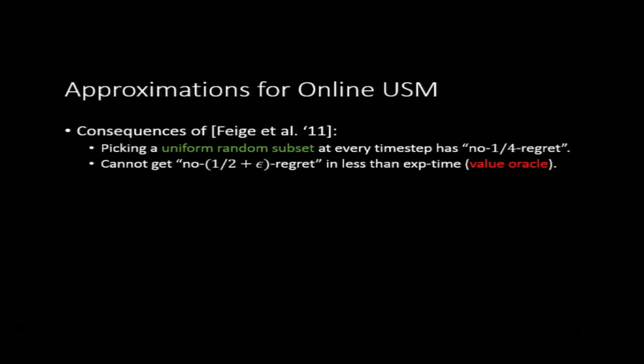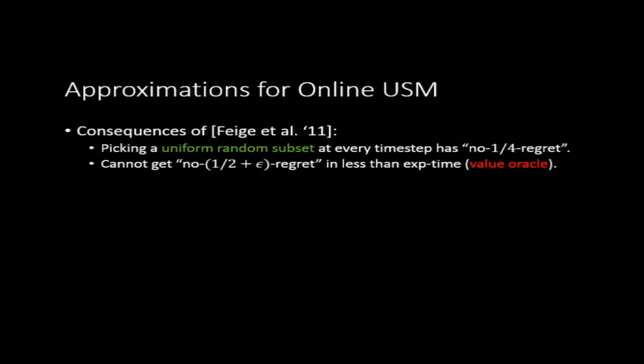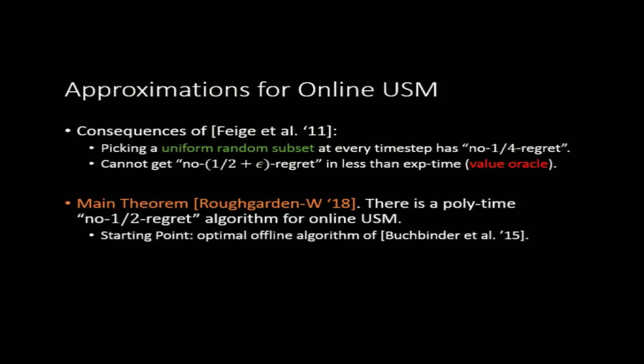All right. So what does the right chart look like for online USM? I guess you guys know the answer because it was spoiled in the title of the talk. But directly, what you can observe just from the Feige et al result is because we know uniform random subset gets one-fourth, it's quite easy to get no one-fourth regret algorithm online. And because, again, online is only harder than offline, we know that we can't hope to do better than no one-half regret. And our result is that for the case of USM, there's no gap. You can actually get a no one-half regret algorithm. So this time the answer indeed was we get the same alpha for both online and offline.